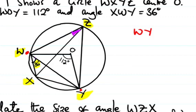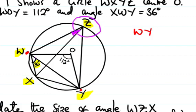We can see that the angle WOY is 112 degrees. The theorem states that the angle at the center is twice the angle at the circumference — that is, the angle at the center is twice the angle at the side.